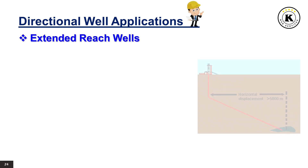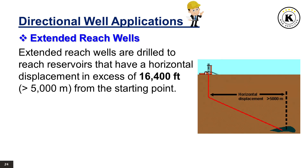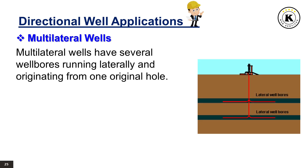Extended Reach Wells are drilled to reach reservoirs that have a horizontal displacement in excess of 16,400 feet (greater than 5,000 meters) from the starting point. Multilateral Wells have several wellbores running laterally and originating from one original hole.